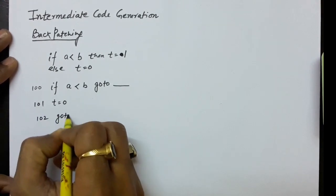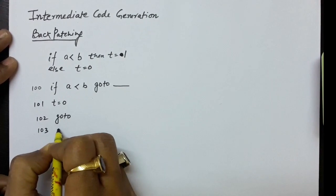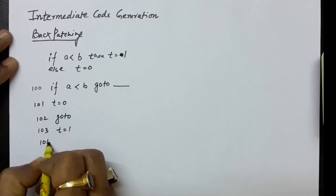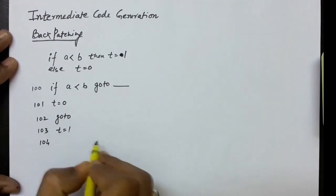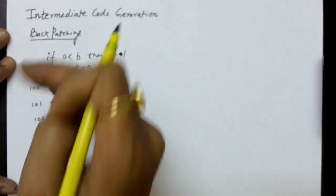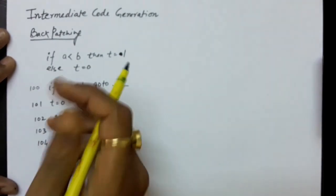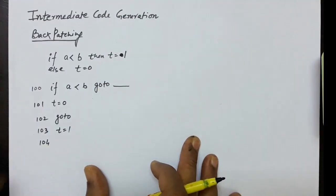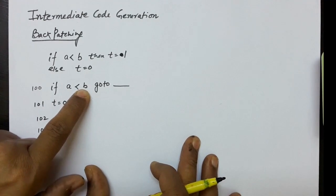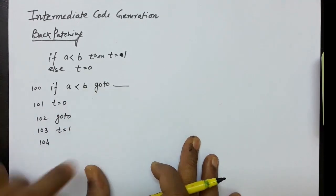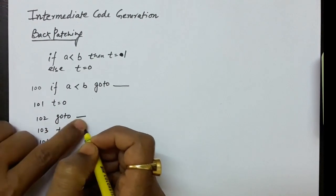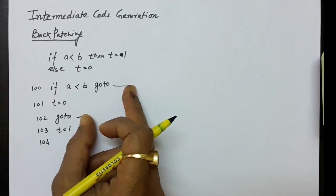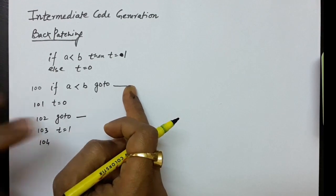At label 100 we write the unconditional jump (label blank), and at label 103 we write t equals 1. These five statements constitute our code. In these five statements, the first is the conditional jump and the label at 102 for the unconditional jump is also left blank. We will fill in the correct target labels once we determine where each jump should actually go — that is the essence of backpatching.